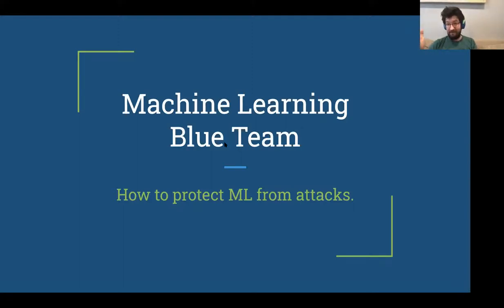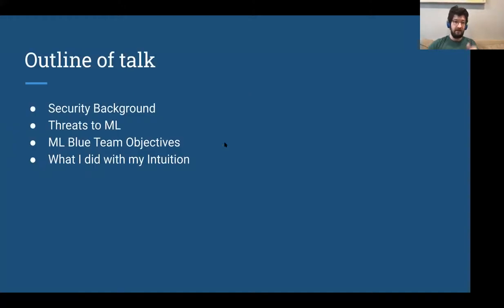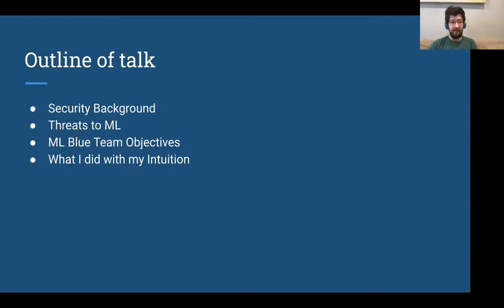I want to talk about the industry problems I'm experiencing: what ML machine learning routine means and the terms I'm talking about here, and then how I solve some of these problems, and where I think more research needs to go in order to actually do machine learning correctly. So I'll cover: security background, defining what machine learning routine means, the threats we're dealing with, correct threat modeling, blue team objectives, and how I solve some of the problems mentioned in the first parts.